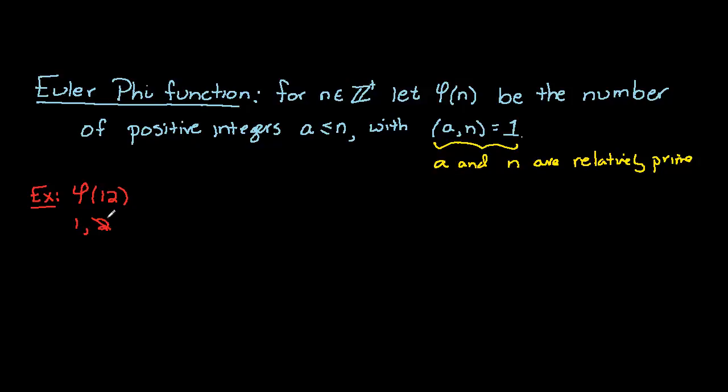2 is not relatively prime to 12. Similarly, 3 and 4 don't work. 5, yes, is relatively prime. 6, no. 7, yes. 8, 9, and 10, no, and 11.